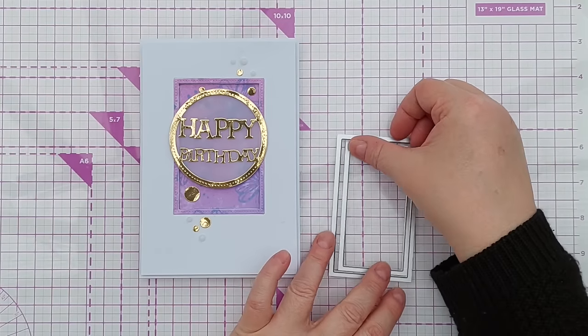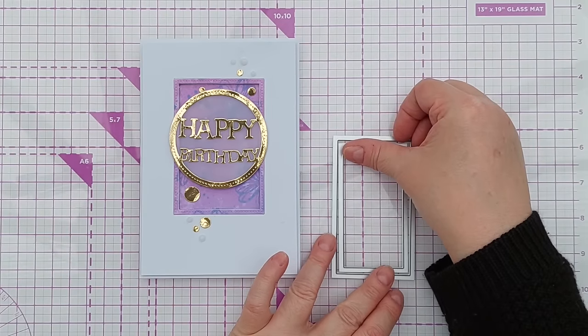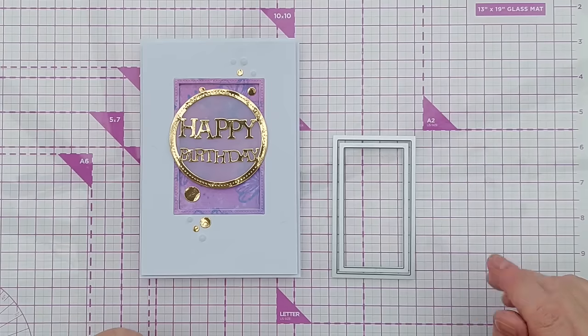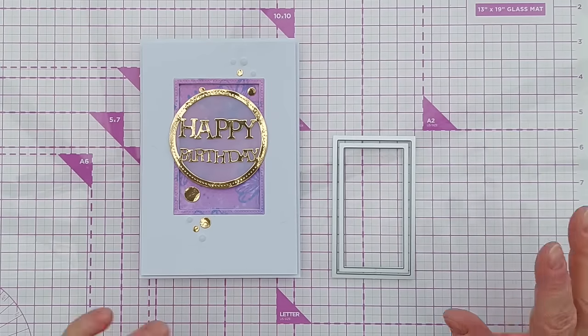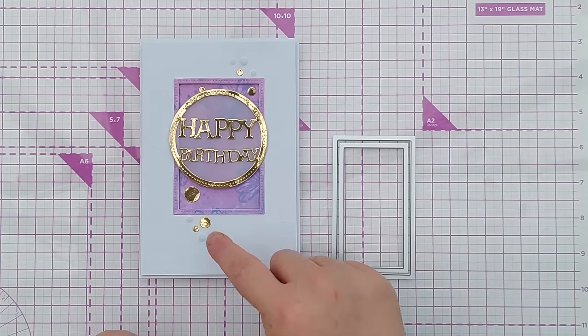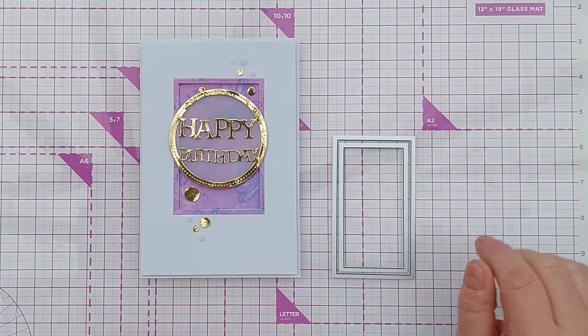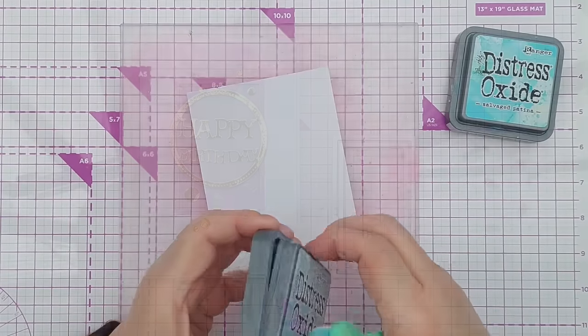I'm going to use two rectangle dies to create my frame and the background piece. I don't have any stitched rectangles that aren't frames, so the stitched frame on this one will be a non-stitched frame.